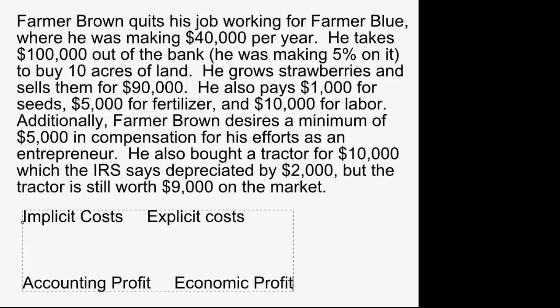Suppose Farmer Brown quits his job working for Farmer Blue where he was making $40,000 per year. He takes $100,000 out of the bank — he was making 5% interest on that money before he withdrew it — and he buys 10 acres of land. Suppose he grows strawberries and sells them for $90,000.